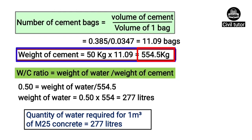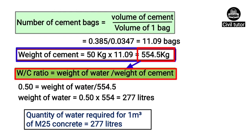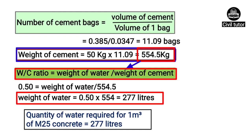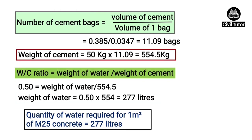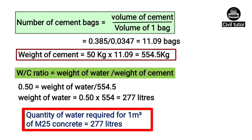Now after substituting this value in the water cement ratio equation, we will get the weight of water equal to 277 liters, which means the quantity of water required for 1 meter cube of M25 grade of concrete is equal to 277 liters.